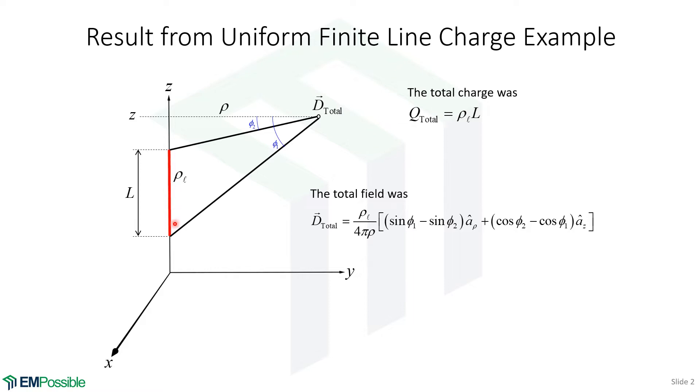So we had a line charge of length L and uniform charge density rho sub L. The total charge was simply the charge density times the length. And then the total field, that was a bit more complicated, and we decided to put it in terms of these angles and integrate from phi1 to phi2, instead of going from ZA to ZB. And we ended up with this expression.